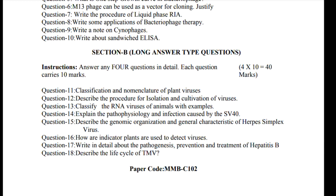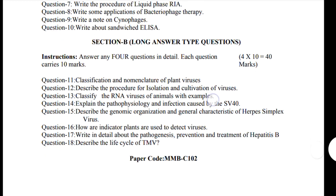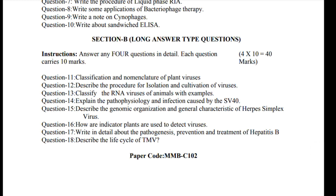Section B is of long answer type questions. There are total eight questions in which you have to attempt only four, and each question carries 10 marks. Question 11: Classification and nomenclature of plant viruses. Question 12: Describe the procedure for isolation and cultivation of viruses. Question 13: Classify RNA viruses of animals with examples.